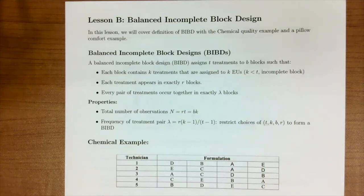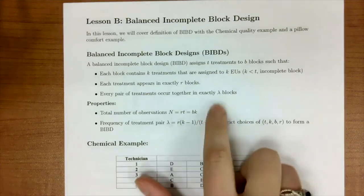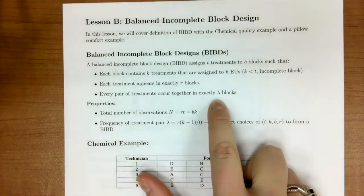We're trying to compare treatment A and B, so we would want them to appear the same amount of times. So in a BIBD, it is set up to a partial balance so that each pair of treatments occurs what we're going to call lambda amount of times.